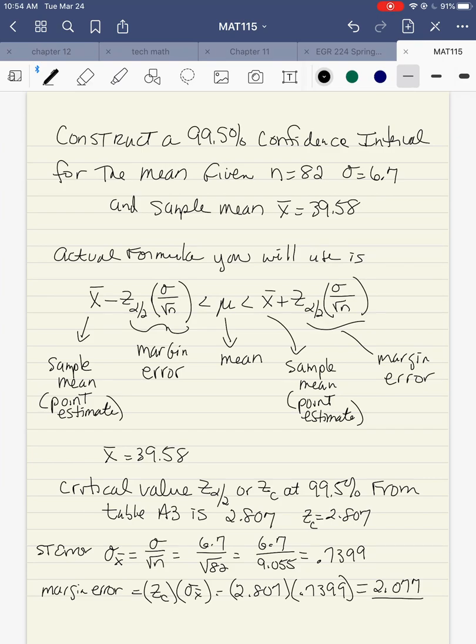So notice we have a sample mean given in this problem. The actual formula that we're using, which is on your formula sheet, is this right here. It looks pretty daunting, but it's pretty straightforward. You take the sample mean, and you subtract the margin of error. Then you take the sample mean, and you add the margin of error. So they're using all these symbols here, but we're going to break it down step by step. So the first thing is the sample mean is given as 39.58. The critical value at 99.5, that 99.5 is there, and the critical value is 2.807. That's from table A3.